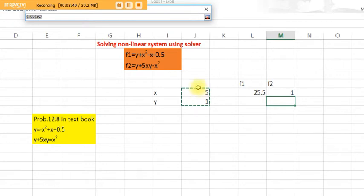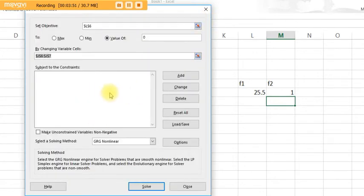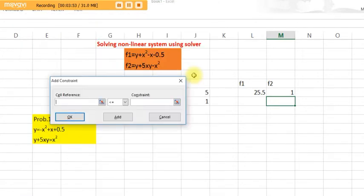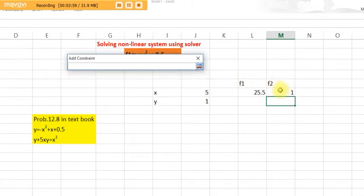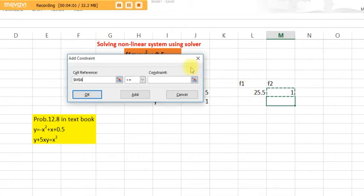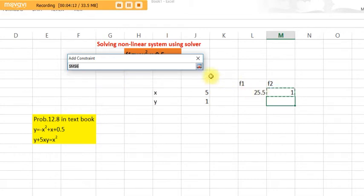By changing x and y. Now we have one more function, so we will add it. Cell reference will be f2, and we want it equal to zero. The cell reference is f2.